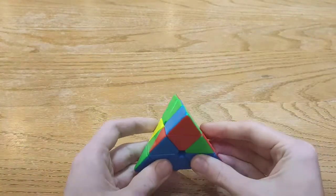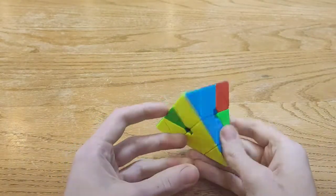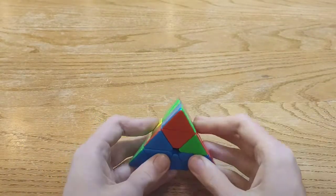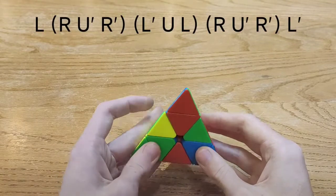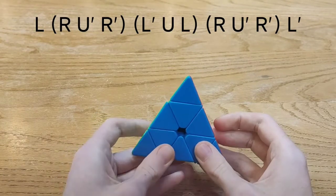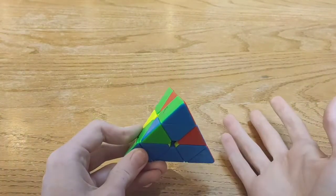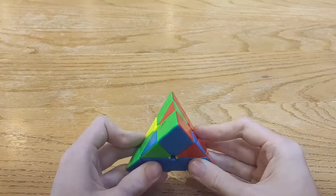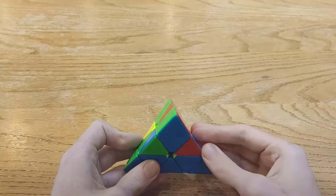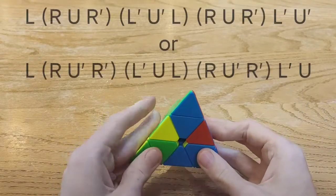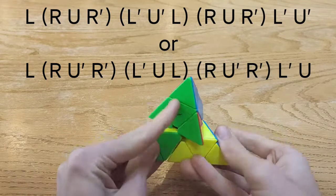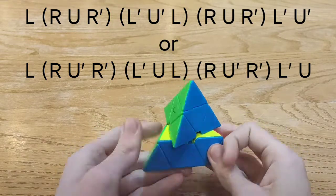Now if instead you have to do a U prime AUF then the algorithm that you're going to use is like that. And if you have no AUF to do then you're going to do either one of those algorithms and then just do the AUF like that.